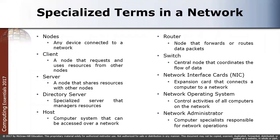These are the specialized terms used in a network. First, a node is any device connected to a network — it can be your laptop or your printer. A client is a node that requests and uses resources from other nodes; for example, you requesting data from a server makes you the client. A server contains data and information and shares resources with other nodes. A directory server is a specialized server that manages resources.